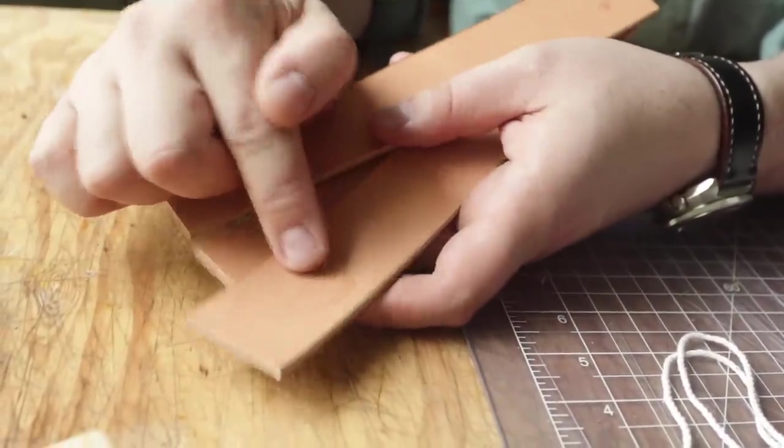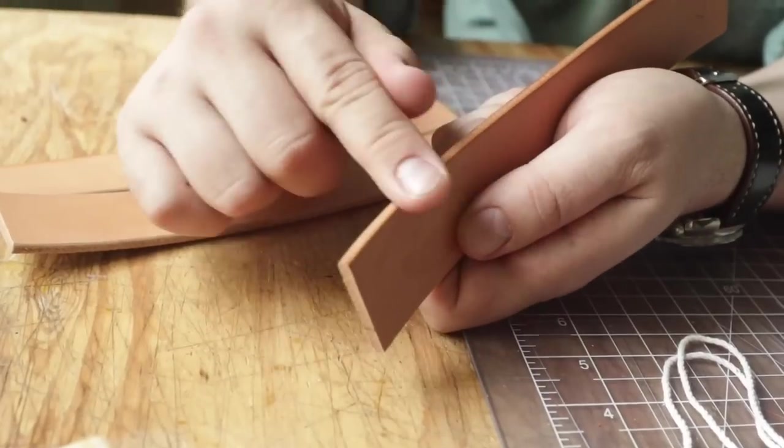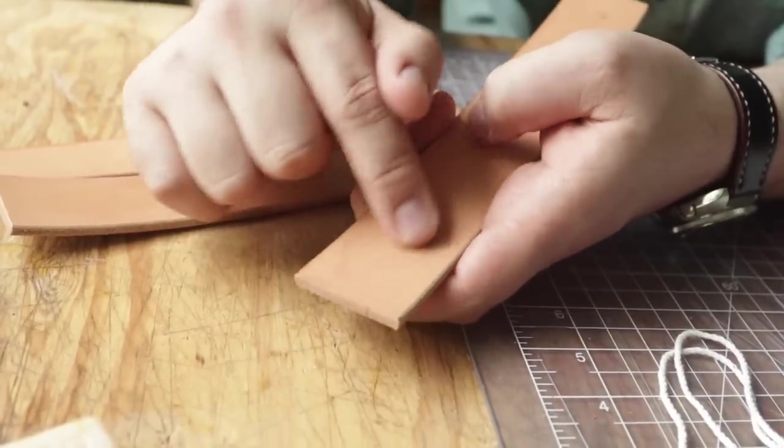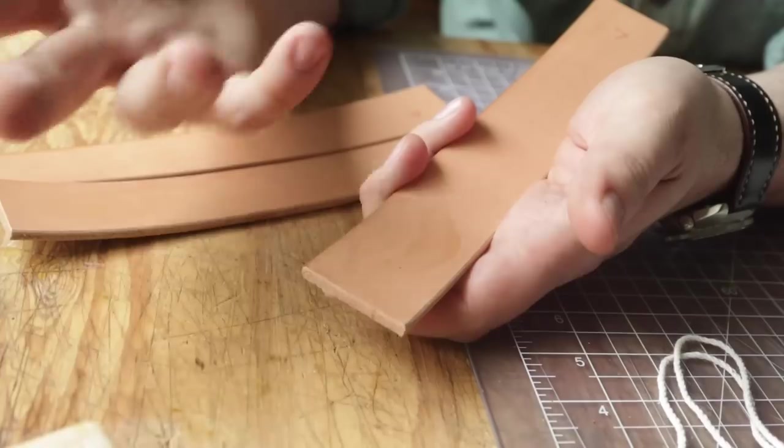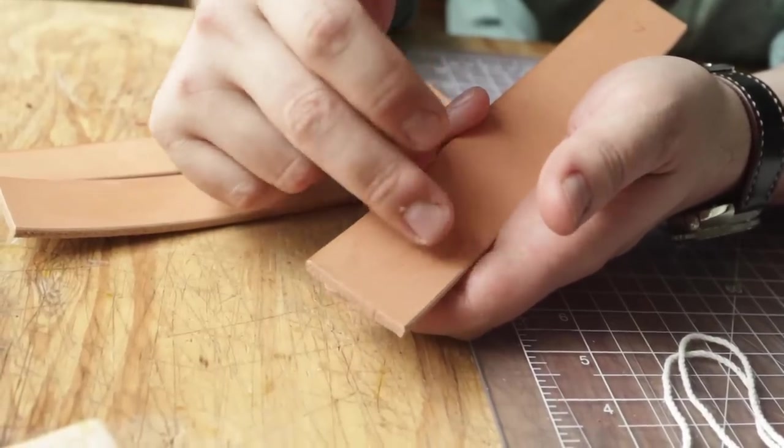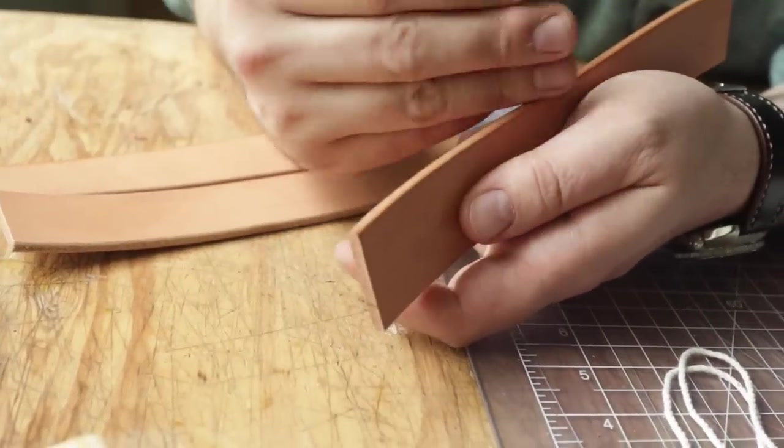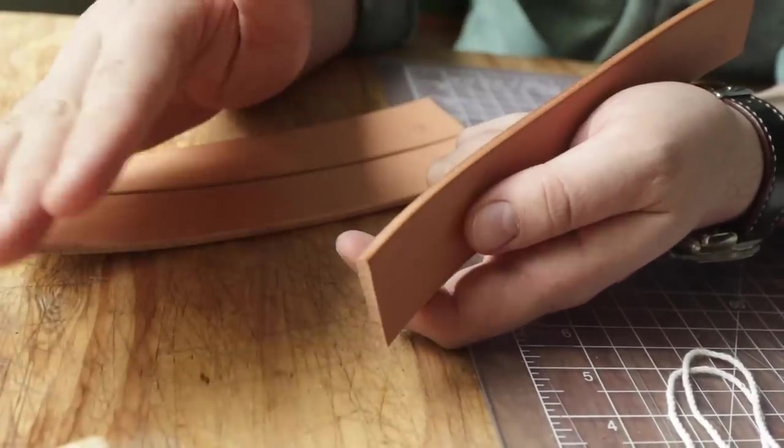But you have to remember with the tokonole, while it does a really good job at quickly getting a nice slick edge, it will stain anything that you get it on. Not anything, but a lot of things it will stain because it is not just something that's soaking in, it's more akin to a paint that you're putting on top of the edge.